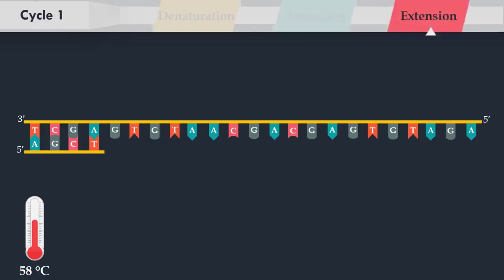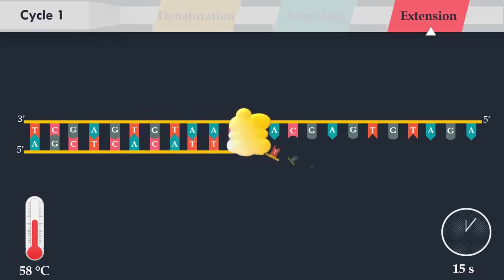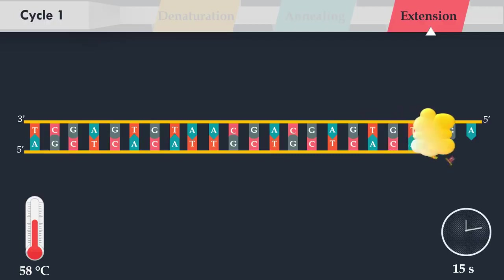In the extension step, the DNA polymerase synthesizes a new DNA strand complementary to the DNA template strand by adding free nucleotides from the reaction mixture that are complementary to the template in the 5' to 3' direction. The temperature at this step depends on the DNA polymerase used.